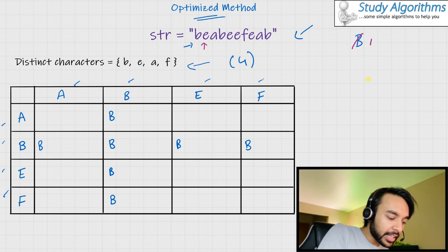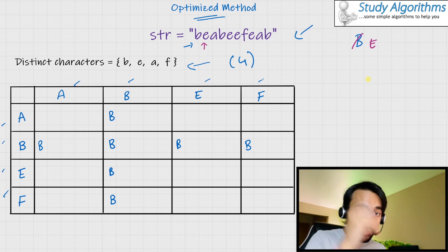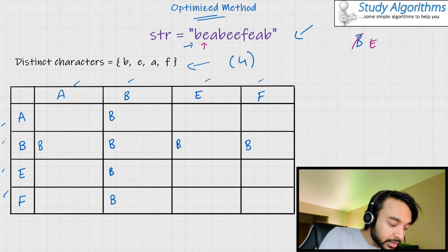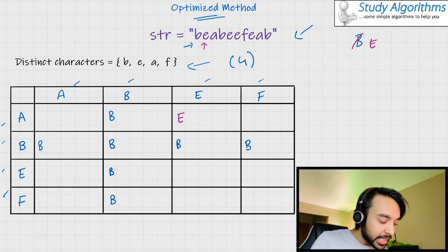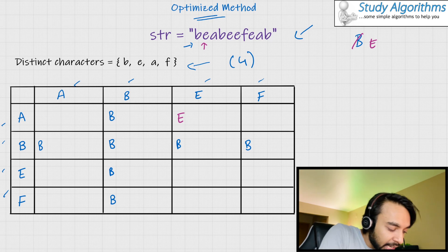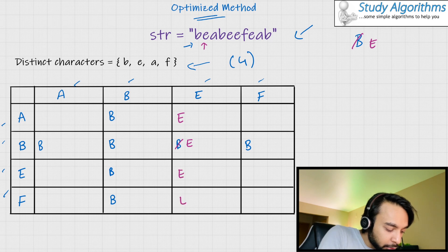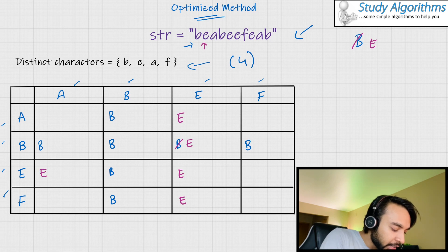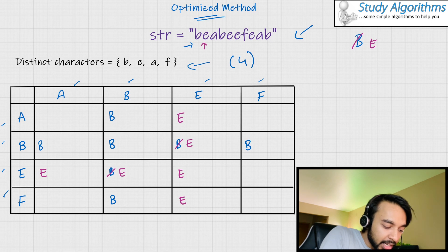The first letter I get is B. As soon as I get a B, I fill in B in all of my column that has B, and in all the rows that have B. Going forward, I move to the second character E. Now I would fill the column of E. I fill in E in the first row. In the second row I already have a B; since E can come after B and both are distinct, I cancel out B and put in E. The third and fourth rows are empty.